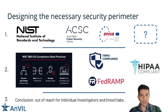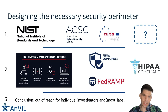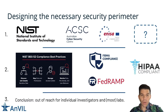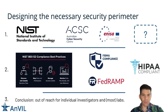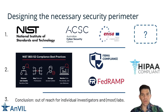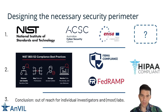Depending on where you live in the world, there are different organizations that publish best practices on what it means for data to be considered in a secure environment. In the United States, this is NIST — the National Institute of Standards and Technology — which publishes documents, one of which is NIST 853. That's a book of rules, guidelines, and checks that ensure your environment adheres to best practices. Once you have this set of controls implemented at an institution, you can have it compliance verified, which carries terms such as FISMA, FedRAMP, or HIPAA for dealing with human data.